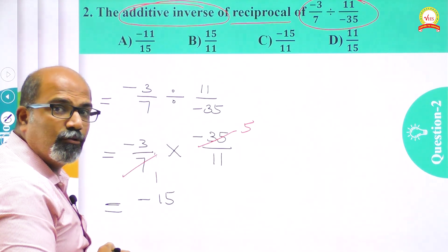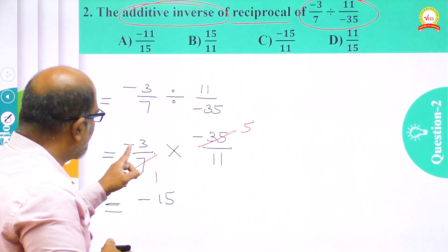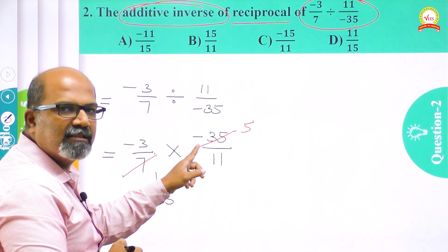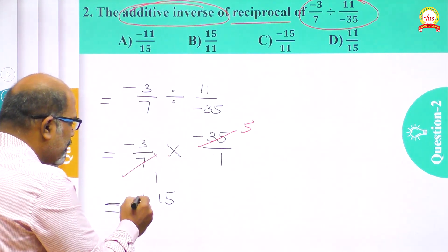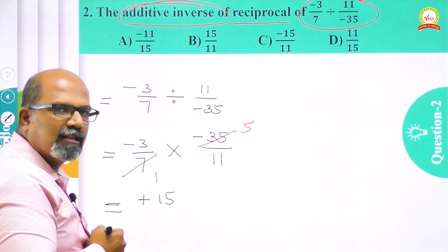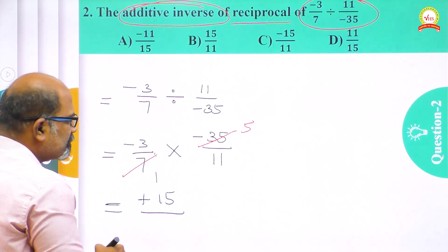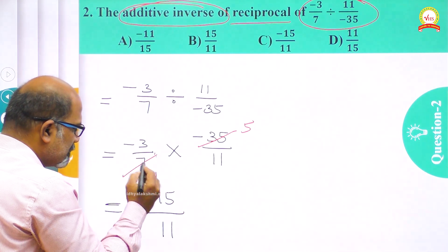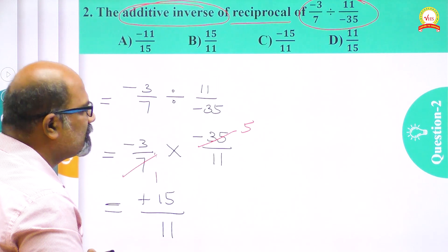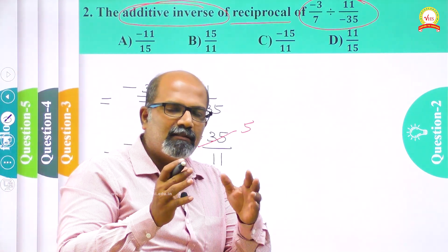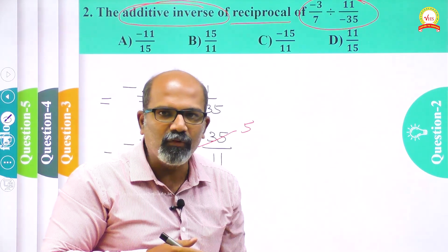Is it minus 15? Look here carefully — there is one minus here and another minus there, so minus into minus becomes plus. Yes, exactly — it is plus 15/11. So the first step, simplification of this expression, is over and we have 15/11.